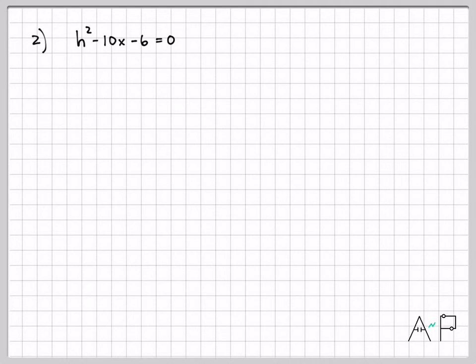So again, we're going to follow the process. We're going to move all the constants to the right. So if I add 6 to both sides, I end up with this.